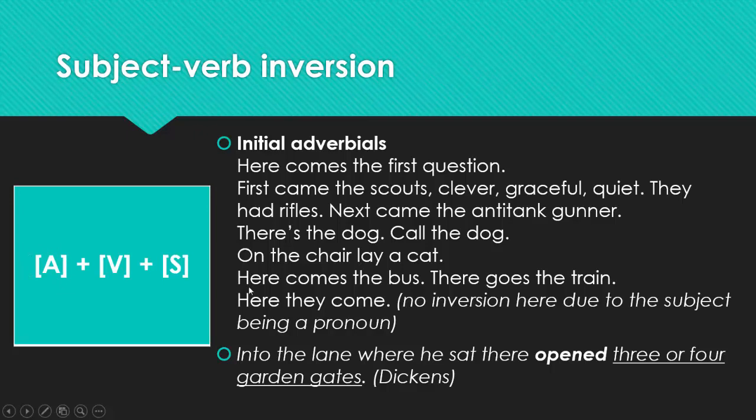A few more examples. Here comes the bus. There goes the train. Inverted word order. Comes the bus. The bus and the train are the subject of the sentence. We have to say something about the following sentence: Here they come. No inversion here due to the subject being a pronoun. If we have a subject as a pronoun, inversion does not happen. That's a rule you have to memorize.